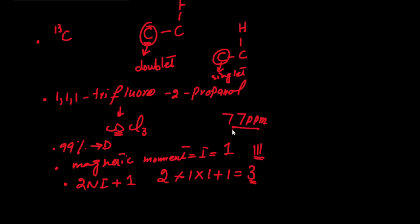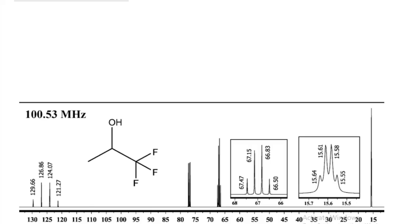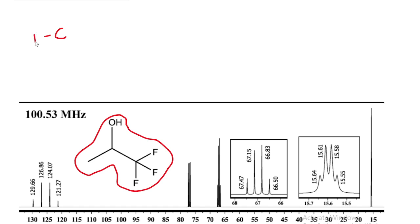These 3 lines will have equal strength and appear around 77 ppm in the carbon-13 NMR spectrum — not the proton NMR spectrum, which has different values from 0 to 12 ppm. Carbon-13 NMR has higher values. Now let's study the spectrum of 1,1,1-trifluoro-2-propanol. To interpret the spectrum, we first need to open the structure of the molecule.